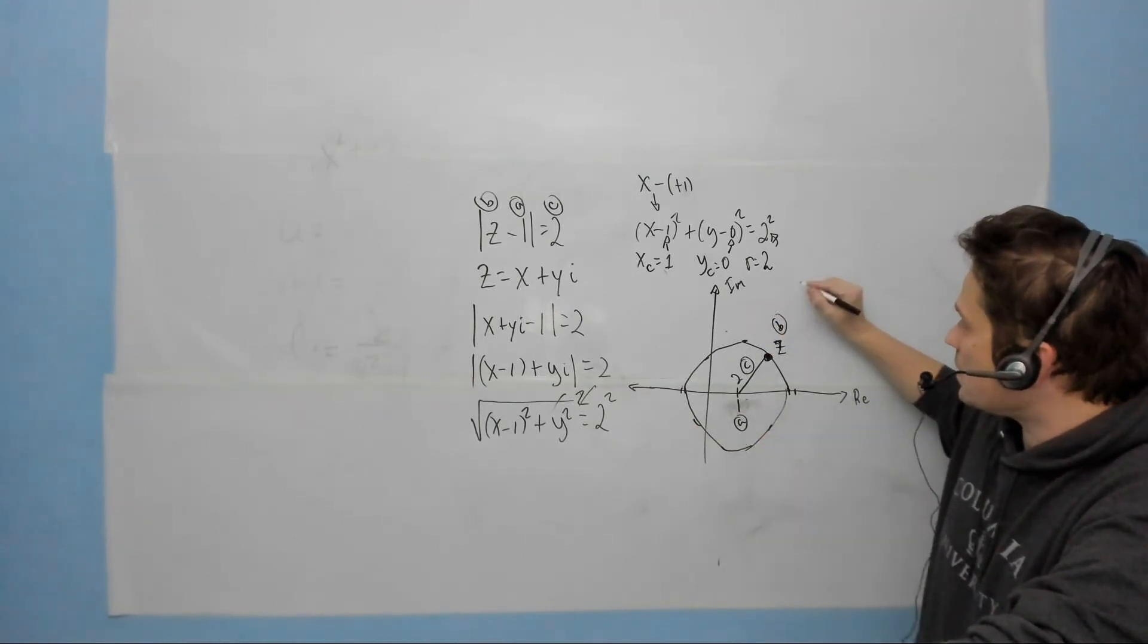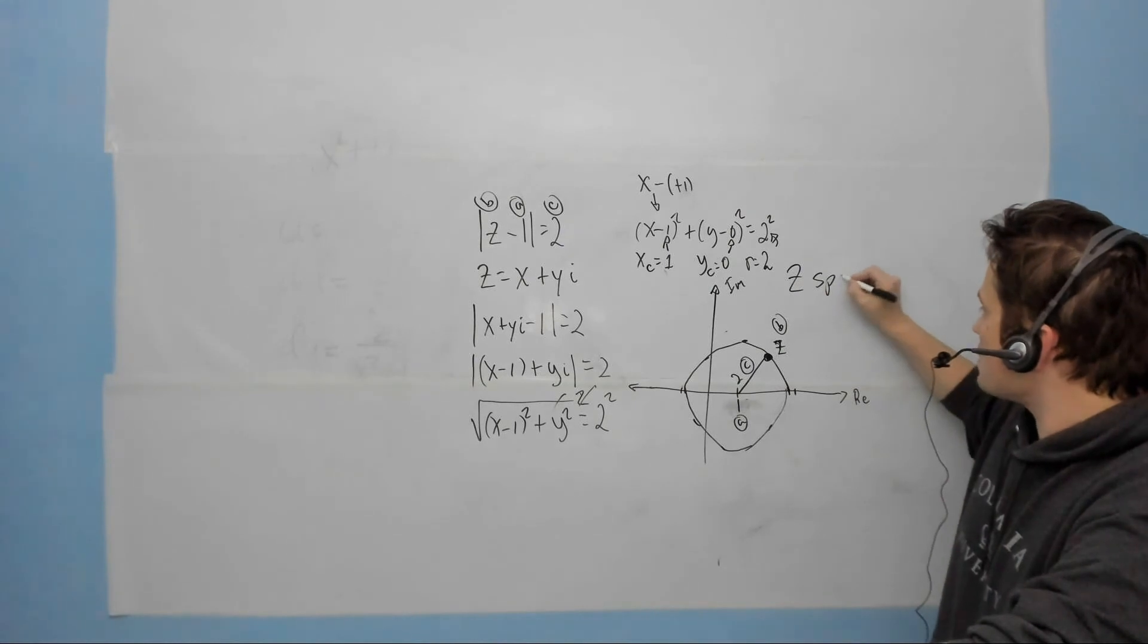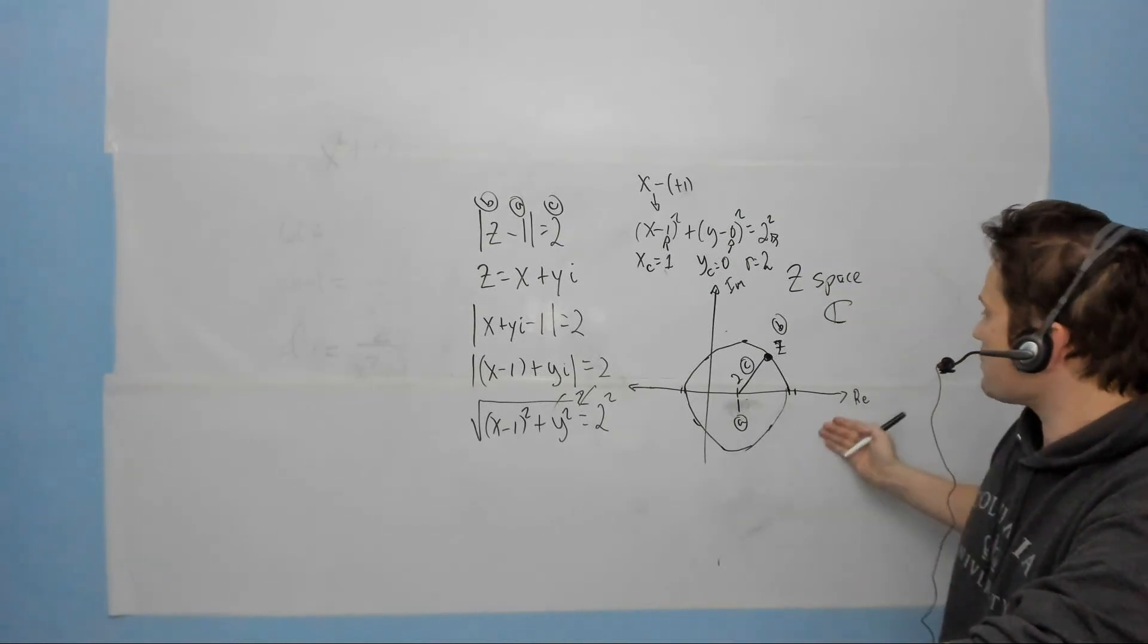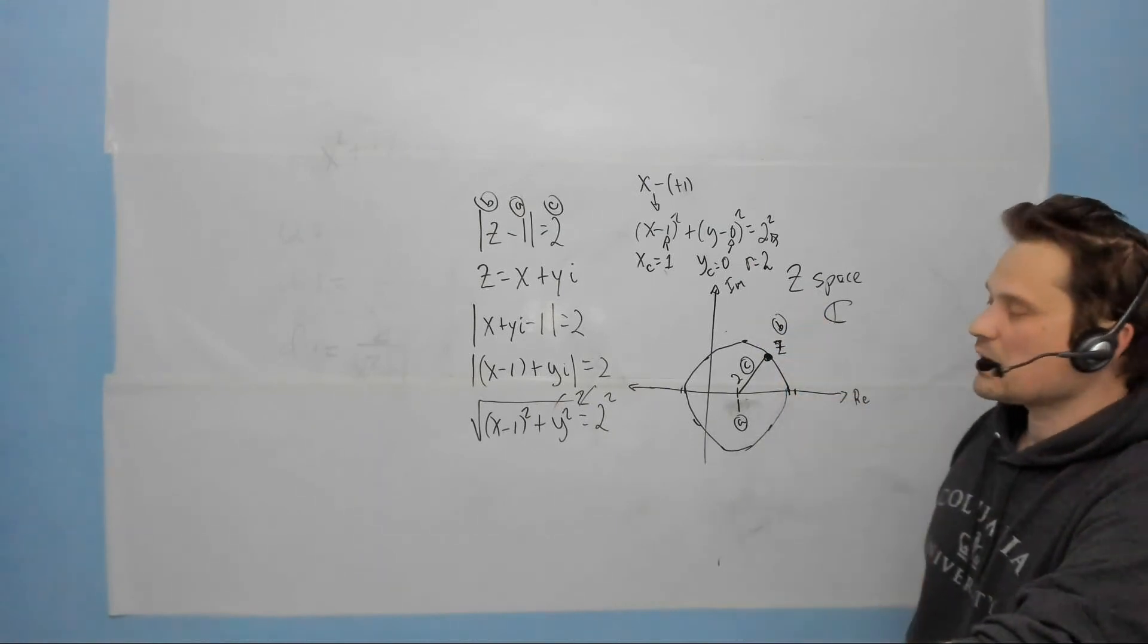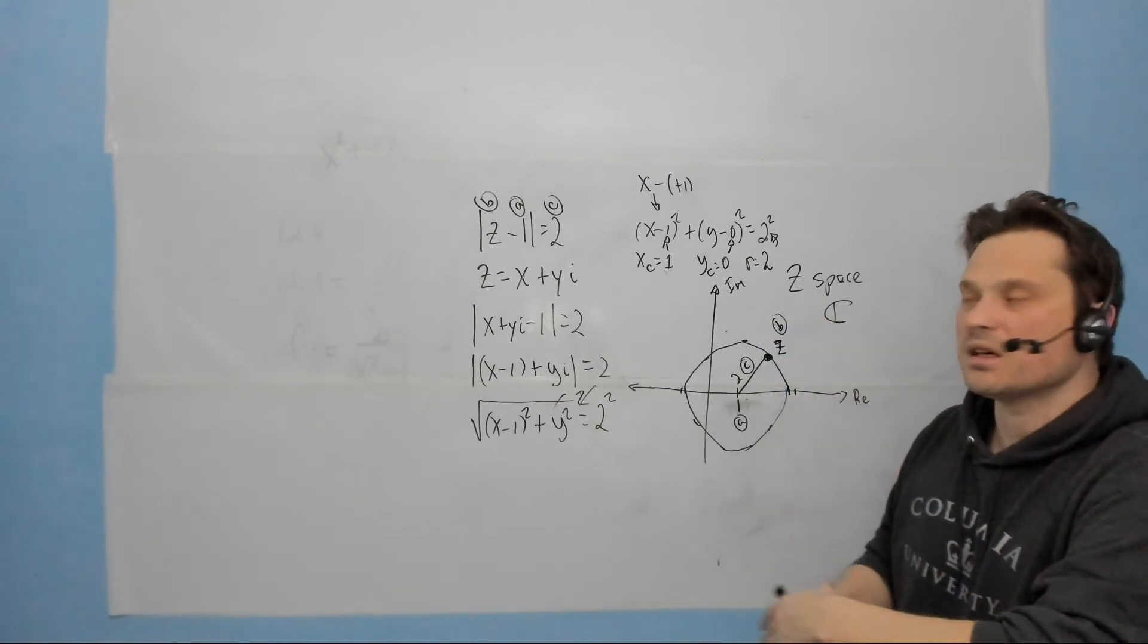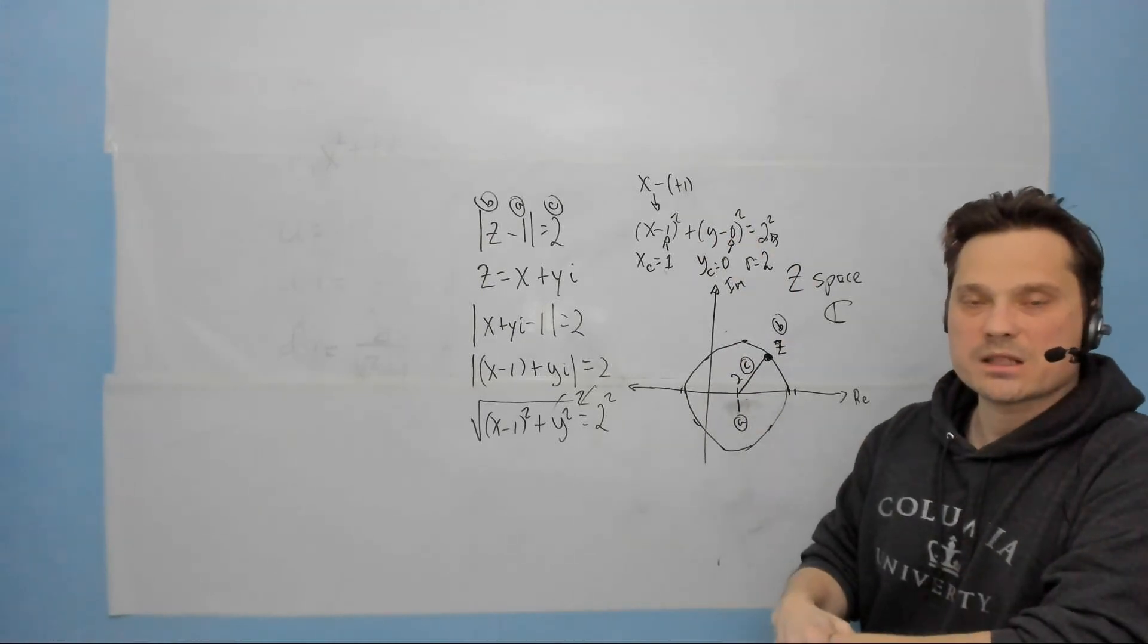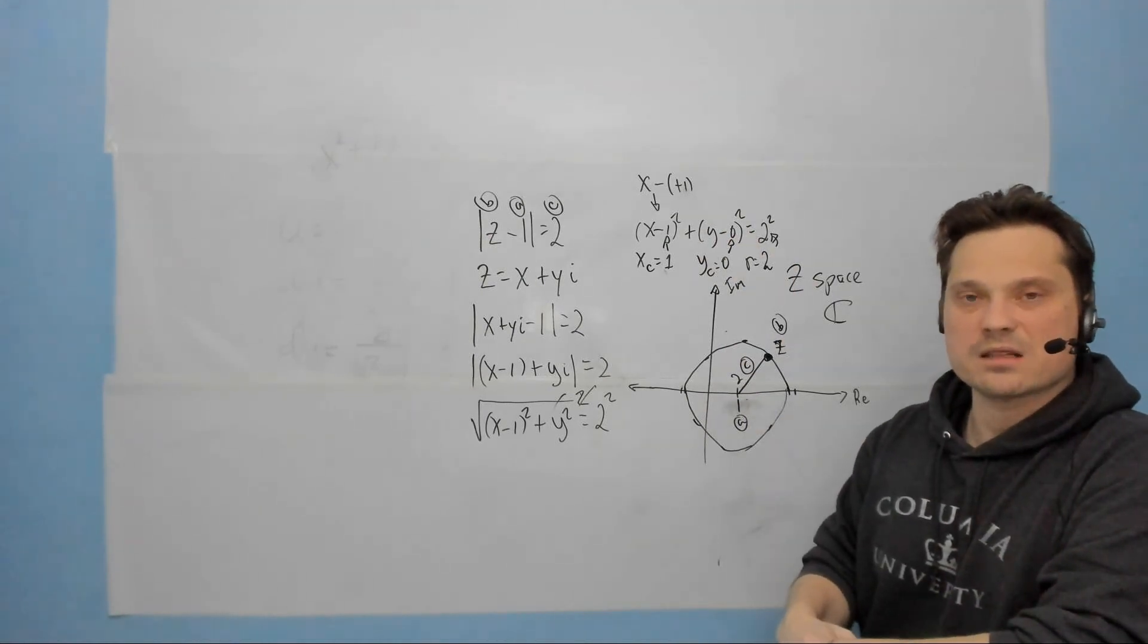Remember that we are ultimately in Z space. If you like, we are in a complex plane C, where this is real, this is imaginary. But the mechanics of making a picture are the same as for XY space in a circle. Thanks so much. I'll see you in another one. Please leave a like and subscribe.